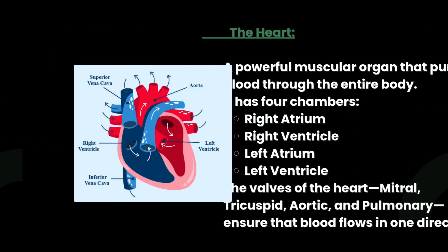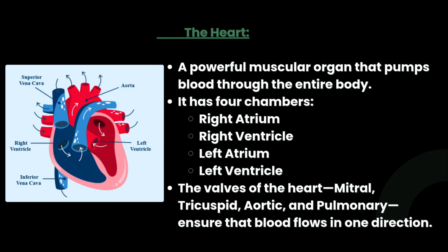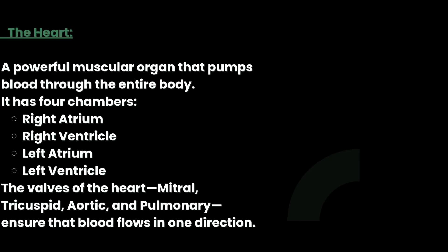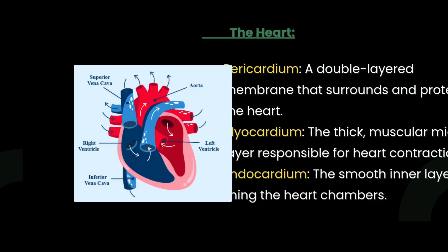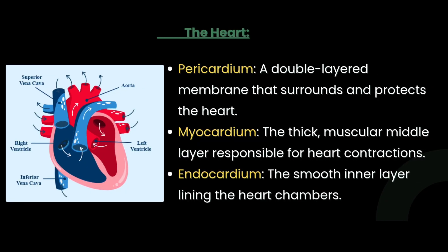The first component is the heart — a powerful muscular organ that pumps blood through the entire body. The heart has four chambers: right atrium, right ventricle, left atrium, and left ventricle. The valves of the heart — mitral, tricuspid, aortic, and pulmonary — ensure that blood flows in one direction.